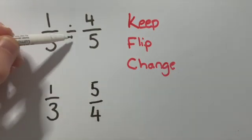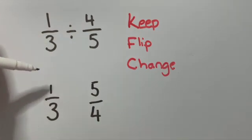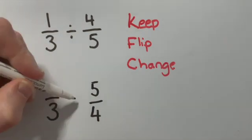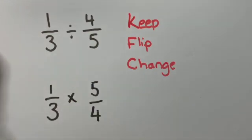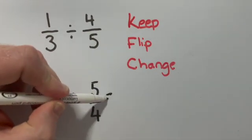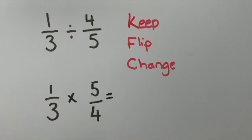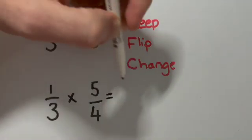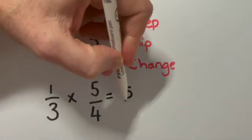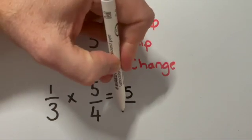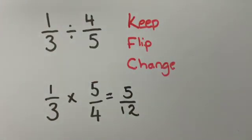And change means we change the divide. The opposite of divide or the inverse of divide is multiply. And then we just continue as if we're doing a multiplication. 1 times 5 is 5, 3 times 4 is 12. We can't simplify the answer. So 5 over 12 is our final answer.